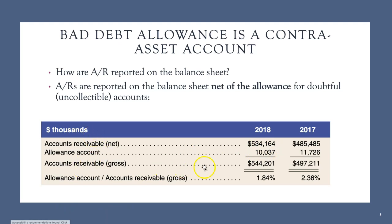The net receivable account is $534.164 million. The meaning of these numbers: during the operation of the firm starting from day one, the firm has altogether $544.201 million dollars that someone else owed the firm. That's the gross accounts receivable — the amount of money the firm is entitled to receive in the future according to the purchase contract. However, based on history, the firm knows that someone is not going to pay them back.